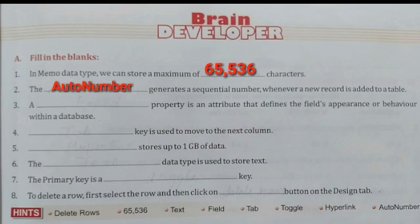Third is: A blank property is an attribute that defines the field's appearance or behavior within a database. As we know, field property gives us information about the field's appearance or behavior. So the right answer is field property.